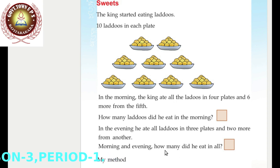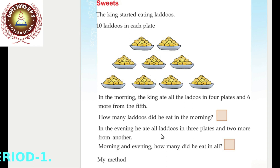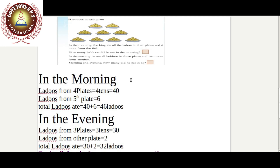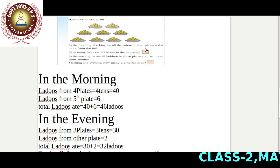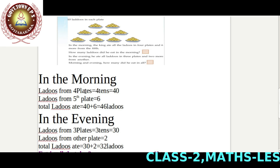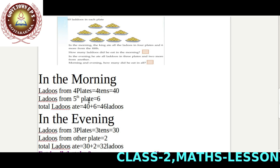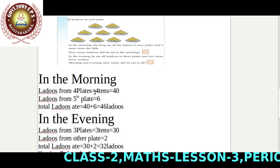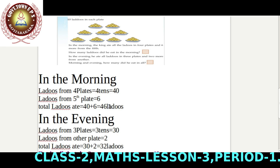How many did he eat in all? We find how many lettuce he ate that day by writing the steps. First, we find how many lettuce he ate in the morning. He ate all lettuce from four plates — lettuce from four plates is forty. Lettuce from the fifth plate: he took only six lettuce. Total lettuce eaten in the morning: forty plus six equals forty-six lettuce.